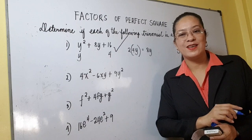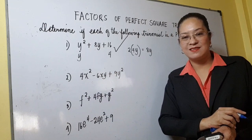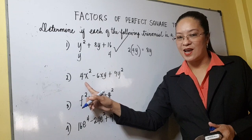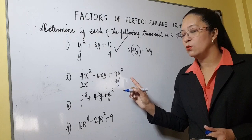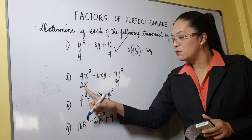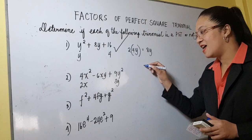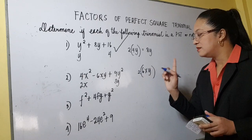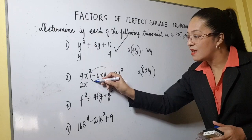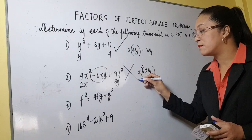How about number 2? Let us see if it is a perfect square trinomial. What is the square root of 4x squared? That is 2x. What about 9y squared? That is 3y. Let us multiply the square root: 2x times 3y is 6xy. But you have to double it — 6xy times 2 is 12xy, which is not the same with your middle term. So that is not a perfect square trinomial.